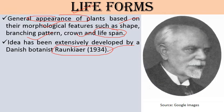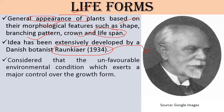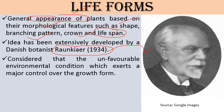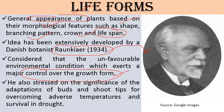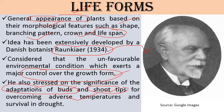Raunkiaer considered that unfavorable or extreme environmental conditions exert a major control over the growth forms of plants, controlling the various plant forms in an environment. He also stressed on the significance of adaptations of buds and shoot tips for overcoming adverse temperatures and survival in drought — how these structures survive under tough environmental conditions. On the basis of these two structures, he classified life forms into various types.